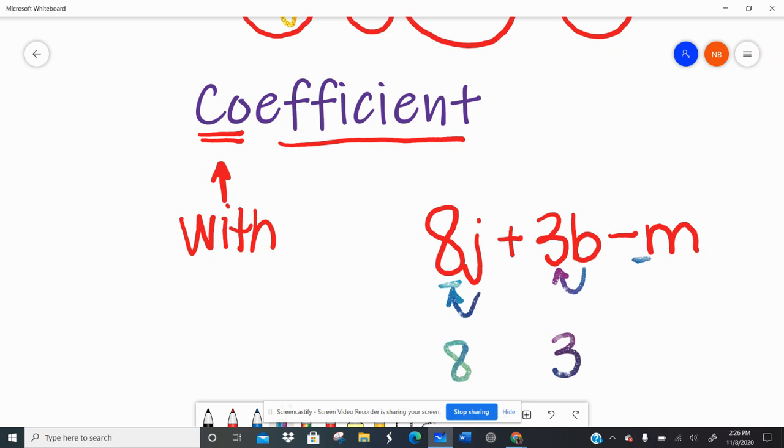If there's no number listed next to the m, there's just one of them, right? I have 1m. I don't need to write the 1 because 1m is silly, right? I have 1m or I have m. They mean the same thing. So we don't write the coefficient 1.